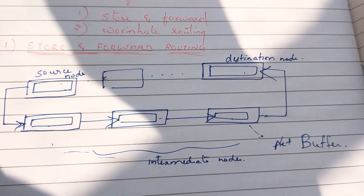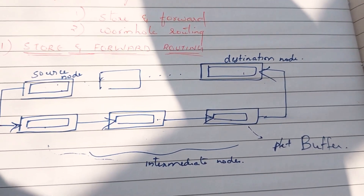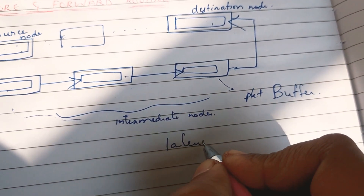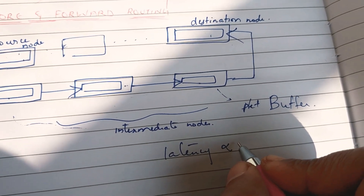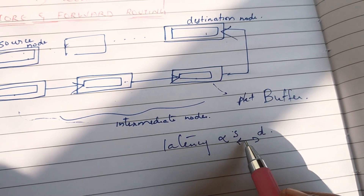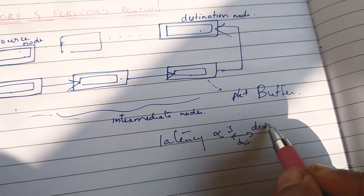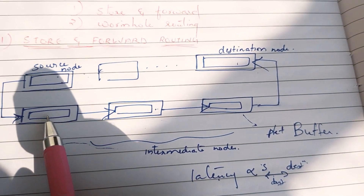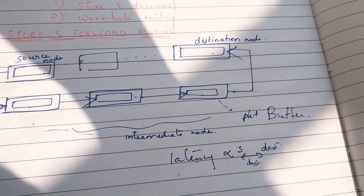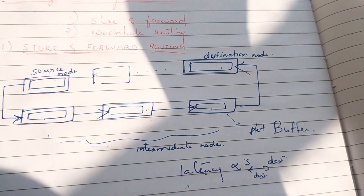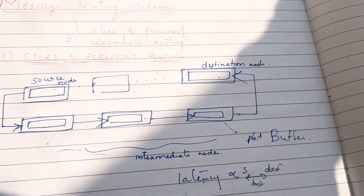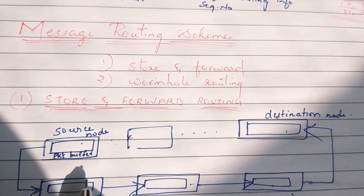Now we consider latency. Latency is directly proportional to the distance between source and destination. The intermediate nodes introduce delay. Each node receives the packet, stores it in a packet buffer, and then forwards it to the next node — that is the delay.